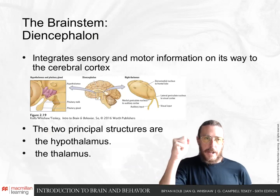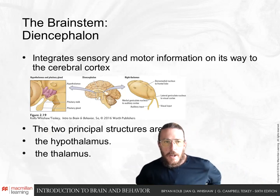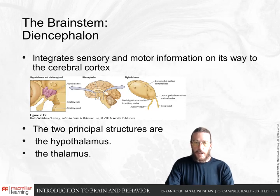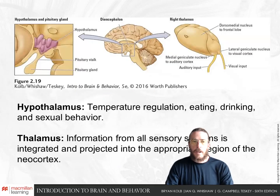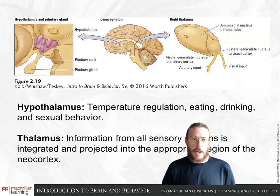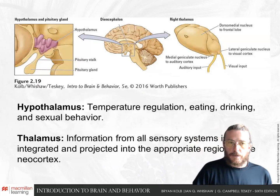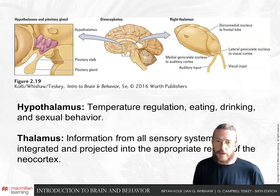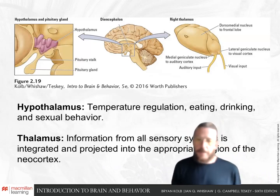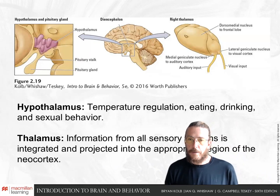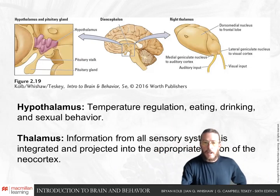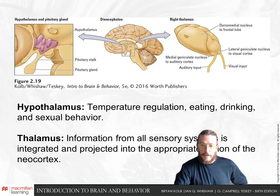Moving up to the diencephalon, we have the thalamus and the hypothalamus. The diencephalon integrates sensory and motor information on the way out to the cerebral cortex. The hypothalamus regulates our temperature, eating, drinking, and sexual behavior, and is composed of many different nuclei. The thalamus is similarly composed of nuclei and acts as a relay station for sensory information — from the visual or auditory systems, for instance — passing it on to the cortex, and may also integrate various senses together.